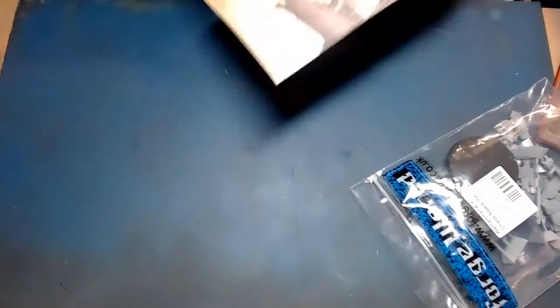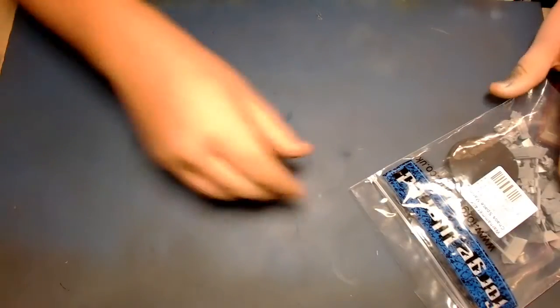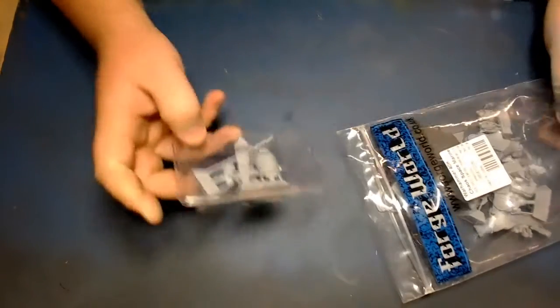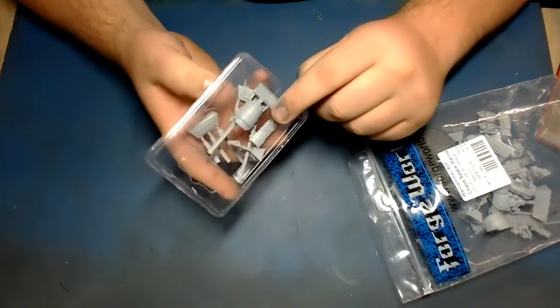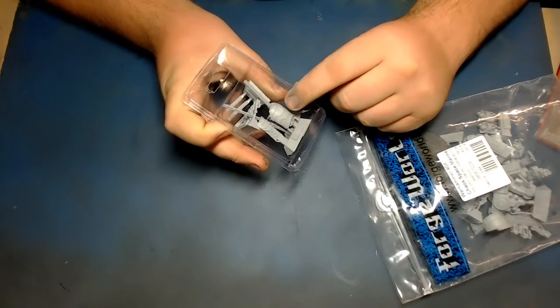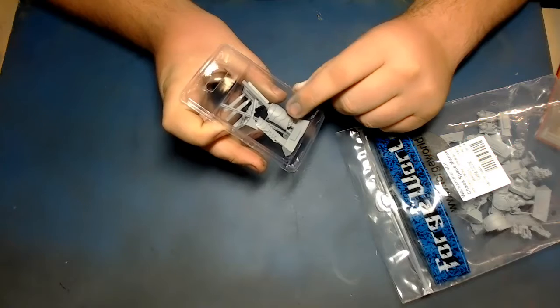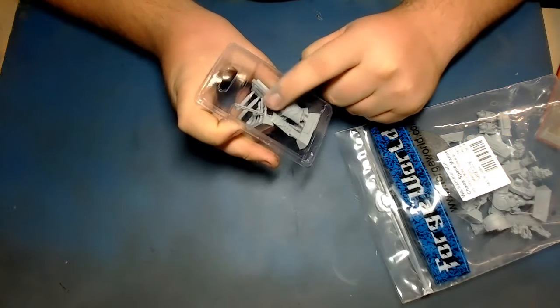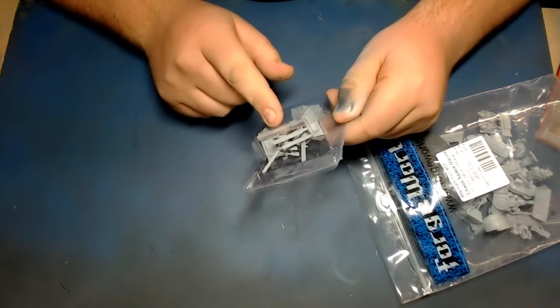Next up, we've got this little box inside. It's got basically like a codpiece almost, and then there's the top carapace that goes over the head. There's some pipes in there.